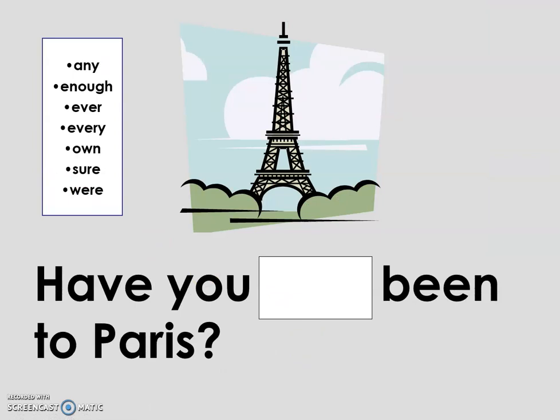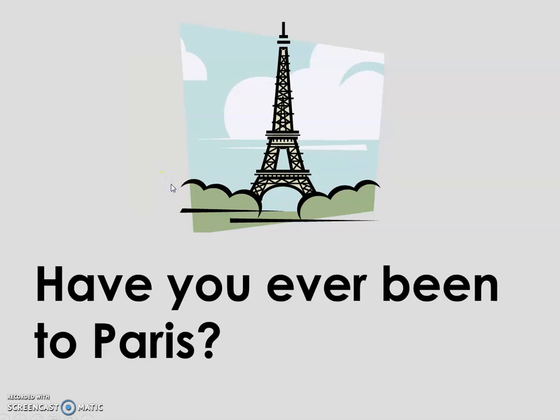Have you ever been to Paris? Which word is missing here — ever, own, enough, any? Ever. Pause the video and read the sentence.